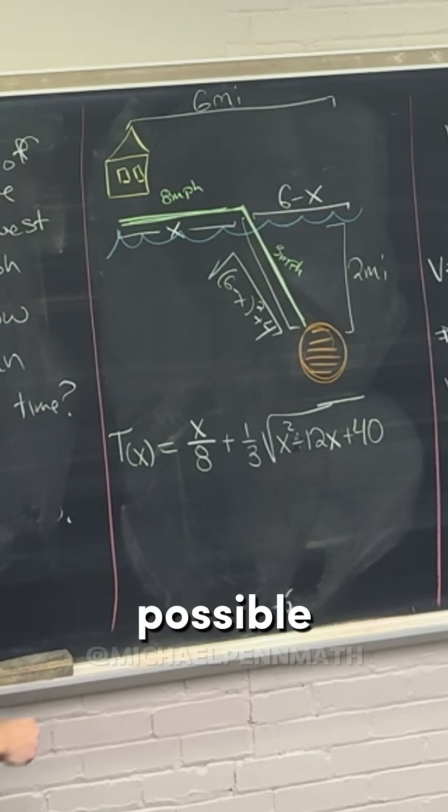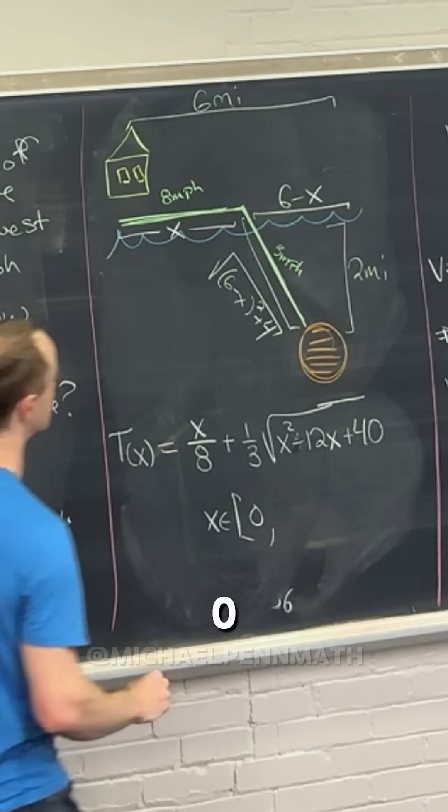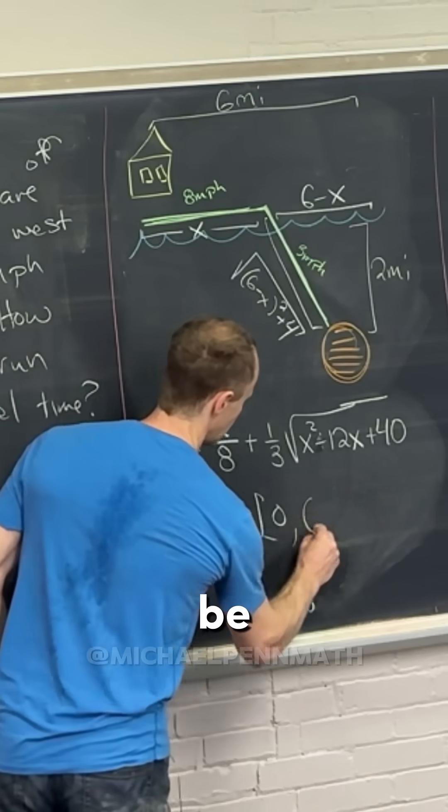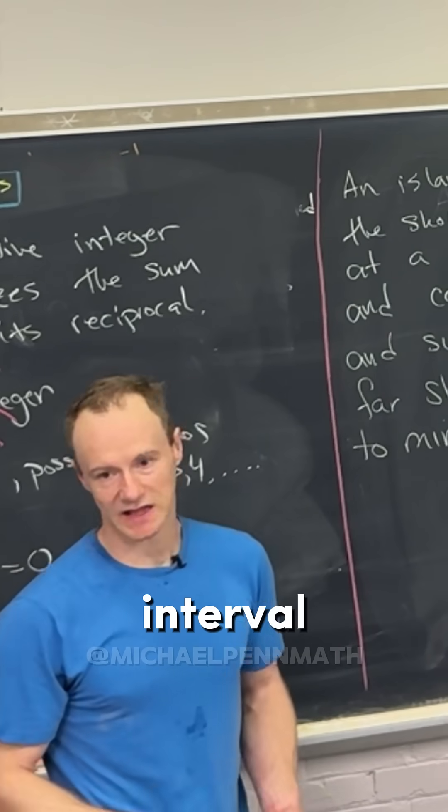What's the smallest possible value of x? It'll be zero. And then the largest value of x would be 6, that would be running as far as possible and then just swimming that 2 miles. So we've got that interval right there.